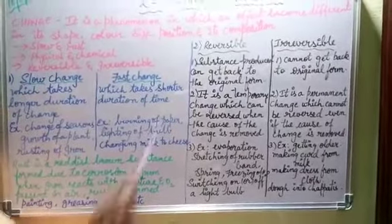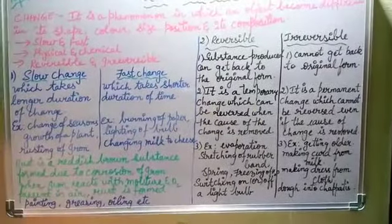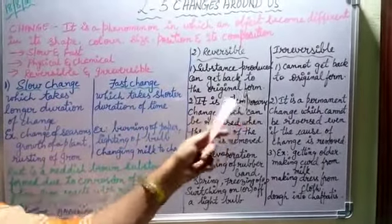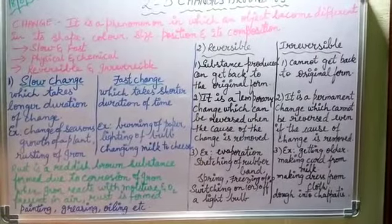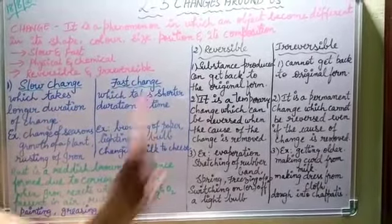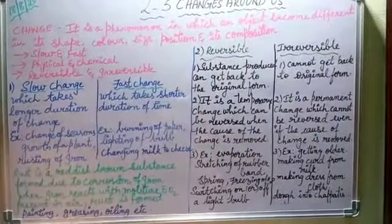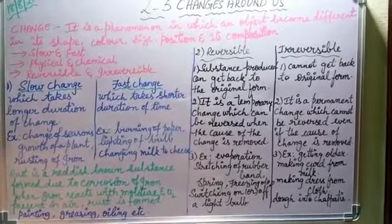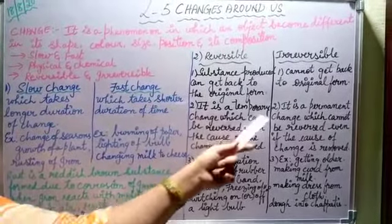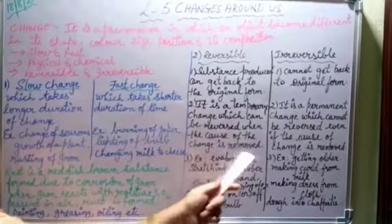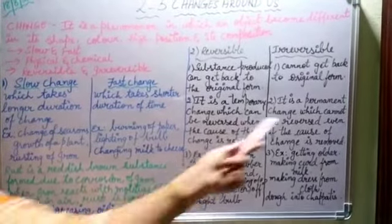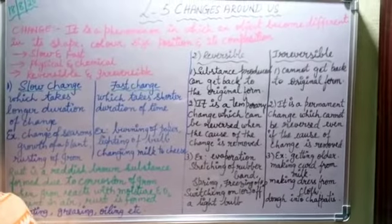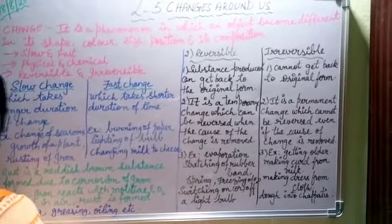Now coming to the second type of change: reversible and irreversible change. Reversible means getting back — the substance produced can return to its original form. Irreversible is the opposite — we cannot get back to the original form. Reversible change is a temporary change which can be reversed when the cause of the change is removed. Irreversible change is permanent — for example, when you burn paper, the paper turns to ash but we cannot get the paper back from ash.